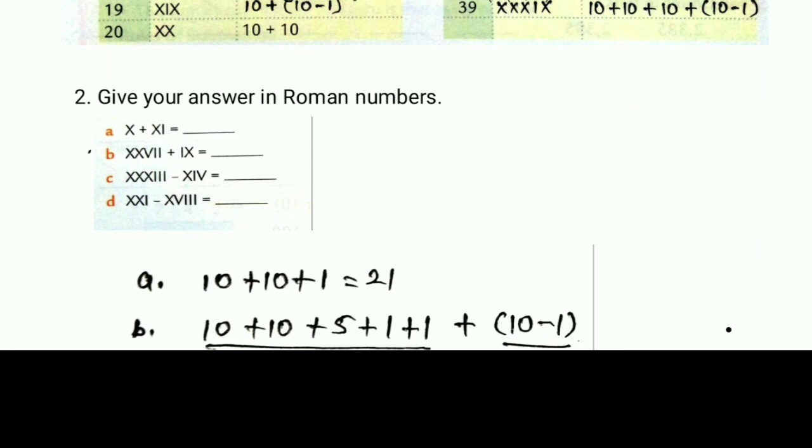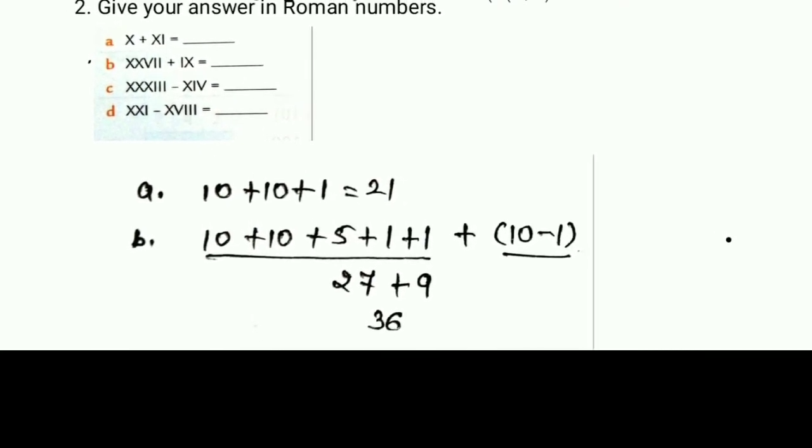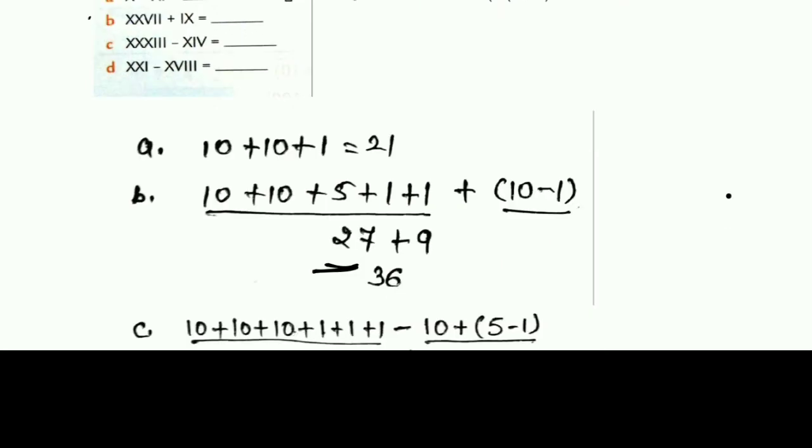Next, give your answer in Roman numbers. The first one is X plus XI equals 21. This is 10 plus 11 equals 21. Next, 10, 20, 25, 26, 27, that's XXVII. Plus IX. If the smaller number will go to first, it means we will do minus. Means 10 minus 1 is 9. So 27 plus 9 is 36.